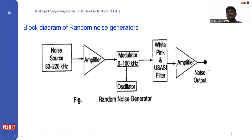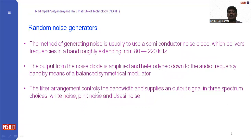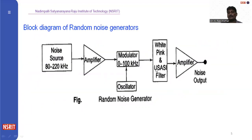The output is then amplified, giving the final noise output. The method of generating noise is to use a semiconductor noise diode which delivers a frequency in a band roughly extending from 80 to 220 kilohertz. The output from the noise diode is amplified and heterodyned down to the audio frequency band of 20 to 20,000 hertz by means of a balanced symmetrical modulator.